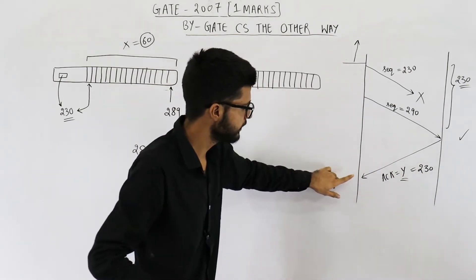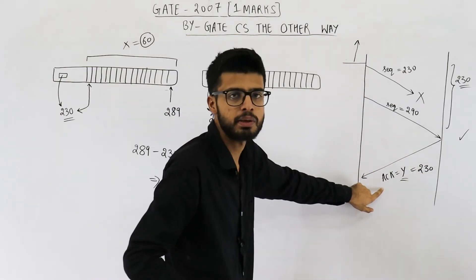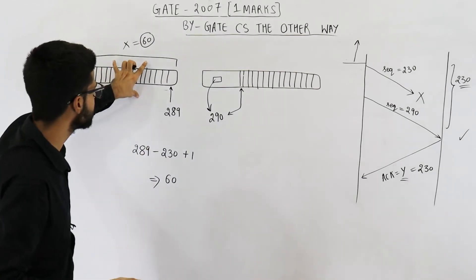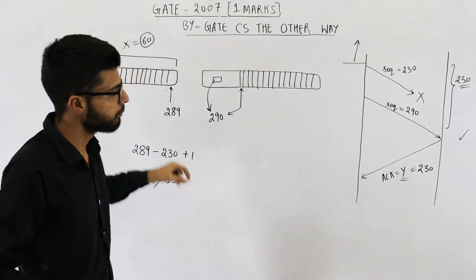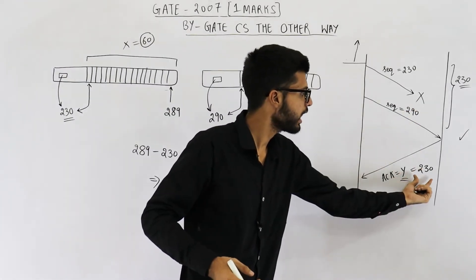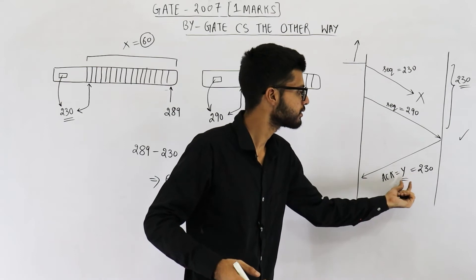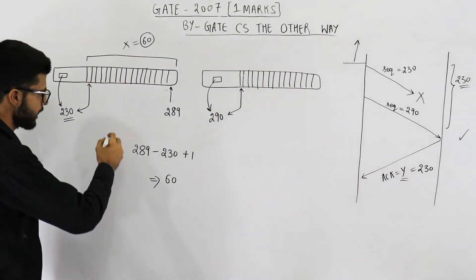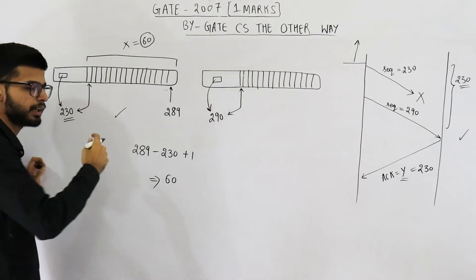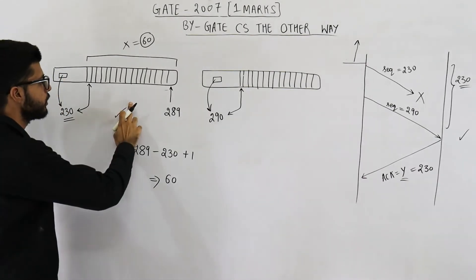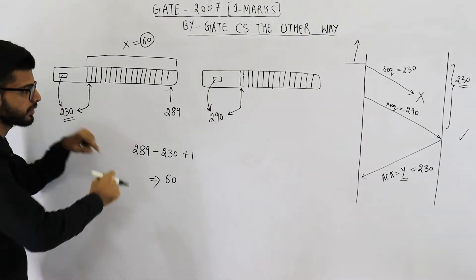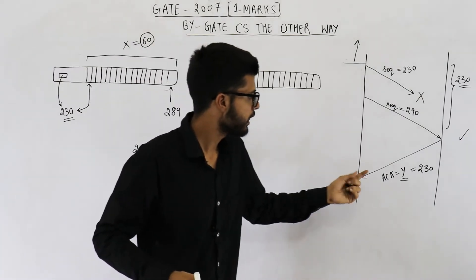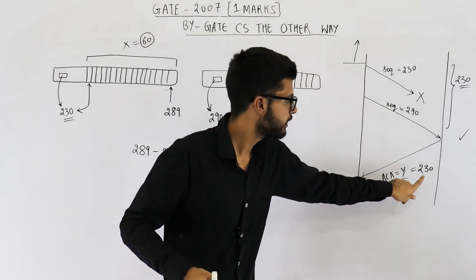Now when the sender gets this acknowledgement, the sender will see that it has already sent this packet but the receiver is saying it wants sequence number 230. So the sender will assume that the packet it already sent was lost, and it will resend it. So the value of x is 60 and the value of y is 230.